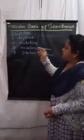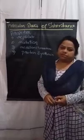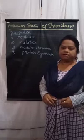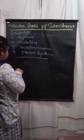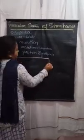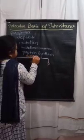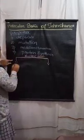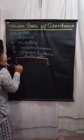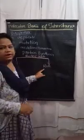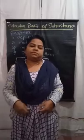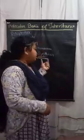The genetic material, also called nucleic acids, is of two types. The two types of nucleic acids are DNA and RNA.